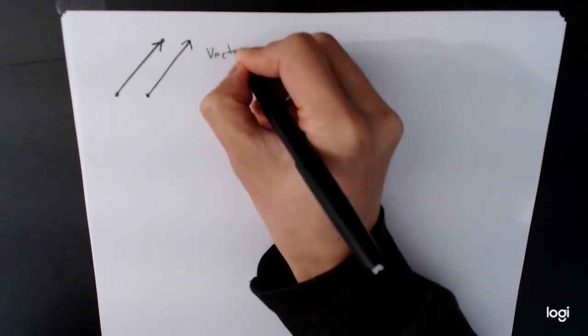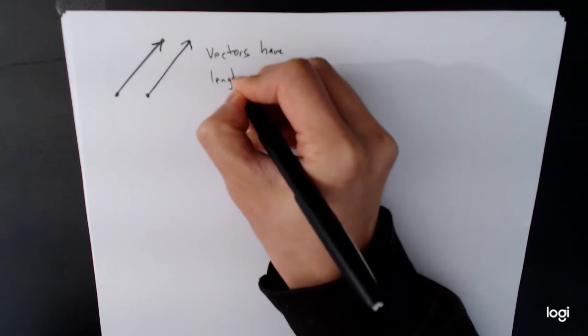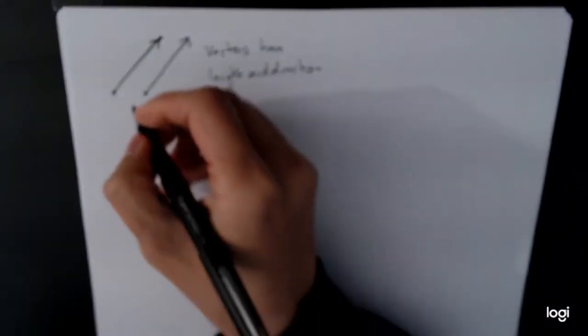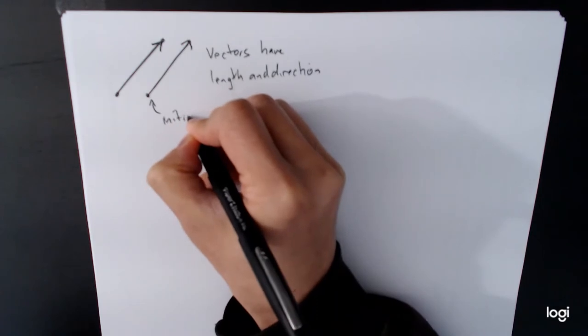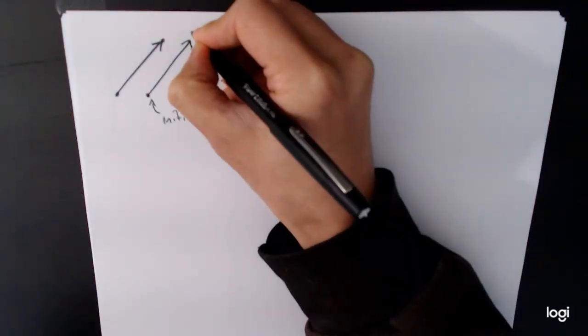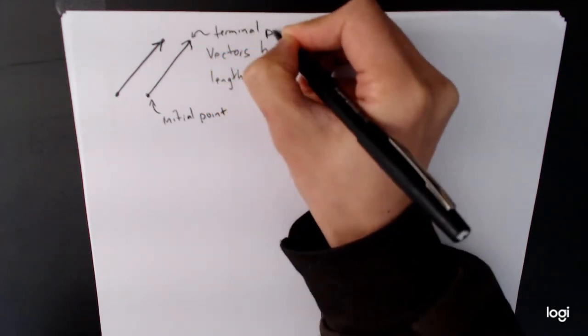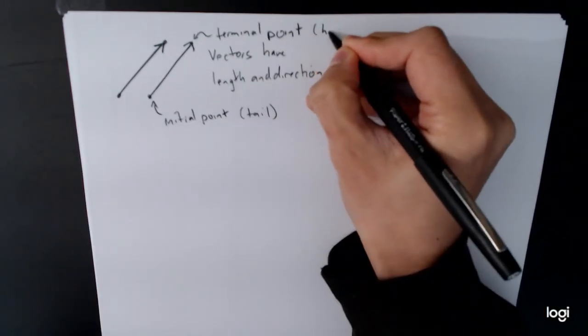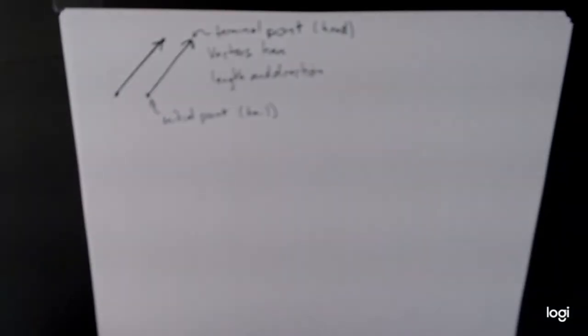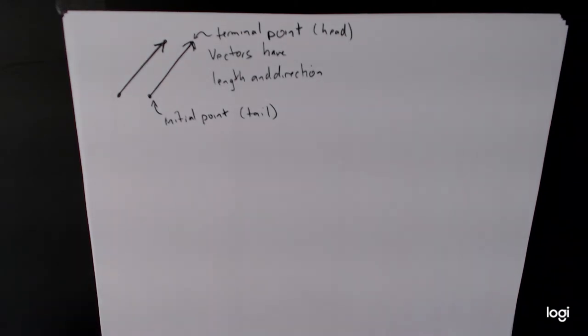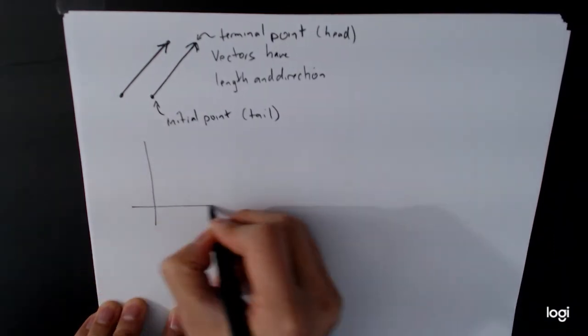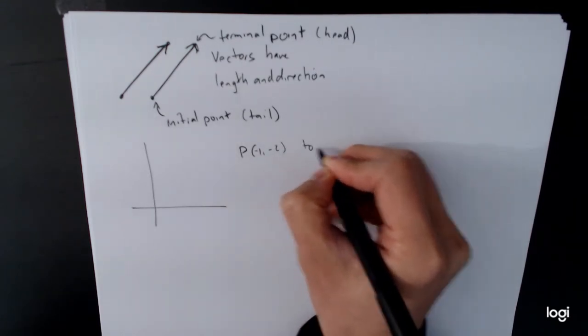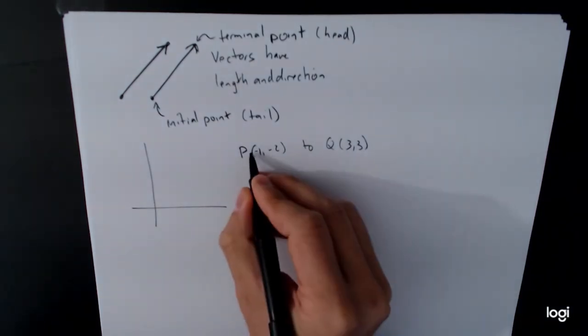So vectors, remember, vectors have length and direction. Now for any particular representation of a vector, we can talk about the initial point and terminal point. Sometimes we call the initial point the tail of the vector, and we'll call the terminal point the head of the vector, so the head of an arrow. And so we want to figure out a way of representing these things and talking about them. So if we look at a specific example where we have a vector that points from the point P, which is (0,-1), to the point Q (2,3).